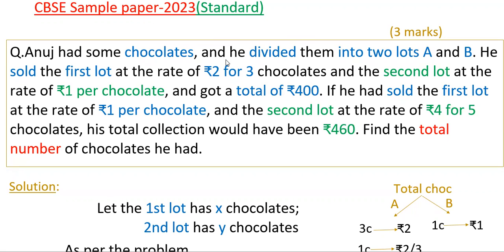Anus had some chocolates and he divided them into two lots A and B. He sold the first lot at the rate of 2 rupees for 3 chocolates and the second lot at the rate of 1 rupee per chocolate, and got a total of 400 rupees. If he had sold the first lot at the rate of 1 rupee per chocolate and the second lot at the rate of 4 rupees for 5 chocolates, his total collection would have been 460 rupees. Find the total number of chocolates he had.